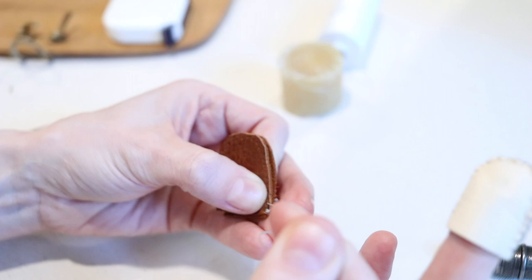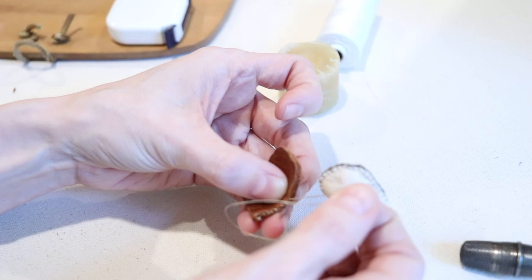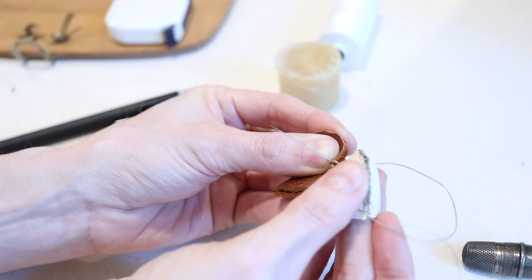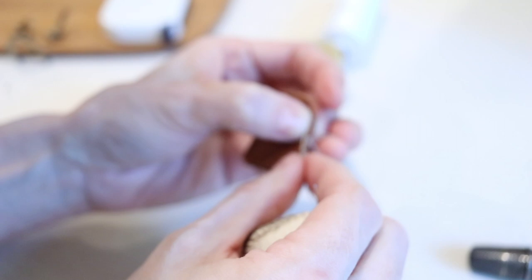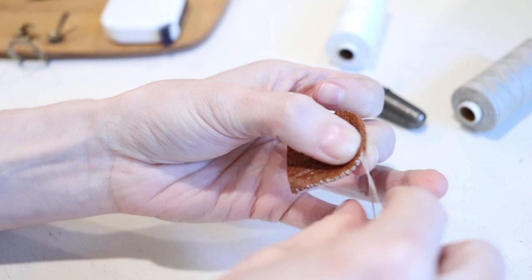So pull the thread from the top, take the needle on the side, down, and around, through the hole on the bottom, and back up again. Again, up through the bottom, around the exterior outer edge, and then back up again. You're just going to repeat this process around the entire exterior of your thimble.